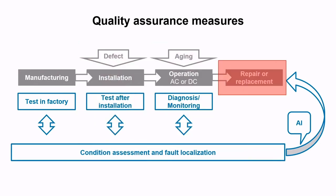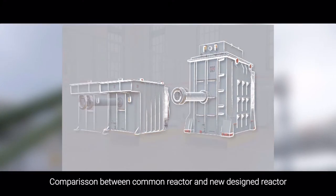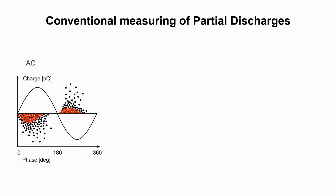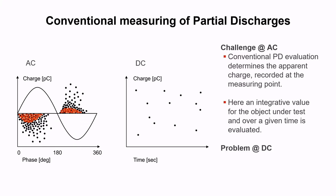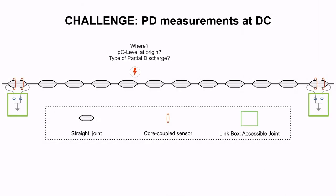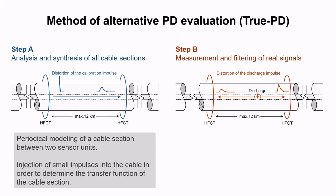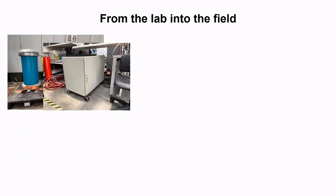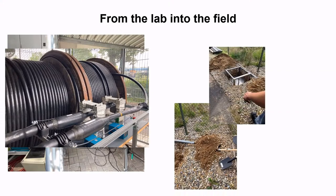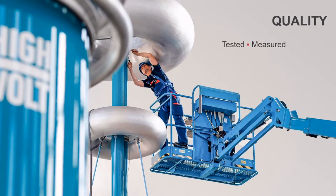Monitoring could be one of the quality assurance measures, covering condition assessment and fault localization. When discussing partial discharge measurements, we have certain challenges for AC — we can have phase-resolved resolution — but for DC, finding the location and real discharge energy is difficult. We developed new technologies like TruePD, which uses a reference measurement to get a transfer function to recalculate effective PD measurements, and we are already transferring this from the lab to field trials.